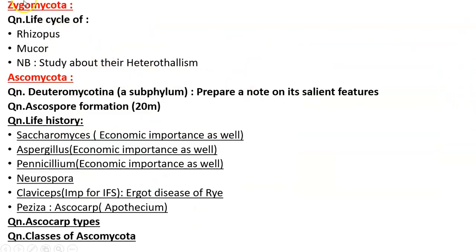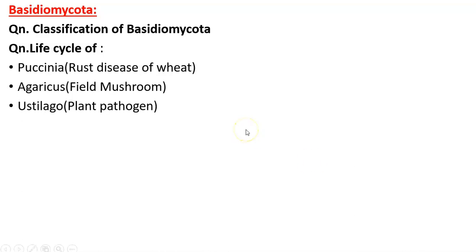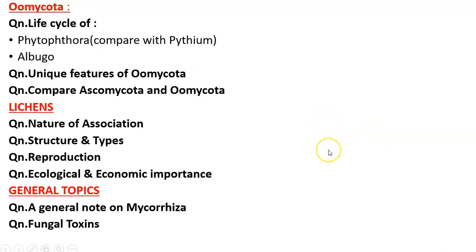We have to see Zygomycota, Ascomycota, and Basidiomycota — these three are the phyla of true fungi. In Zygomycota we have to see Rhizopus and Mucor, which we have already completed. In Ascomycota we have covered Saccharomyces, Aspergillus, Penicillium, and Neurospora. Today's agenda is Claviceps, and by tomorrow we will finish Ascomycota by covering Peziza. After that we'll move to Basidiomycota, covering Puccinia, Agaricus, and Ustilago.